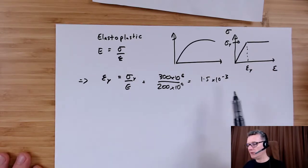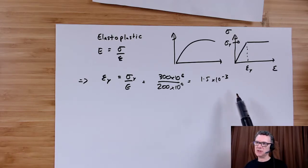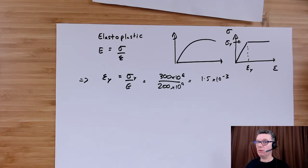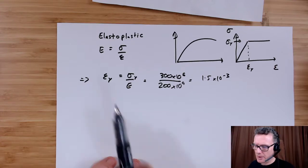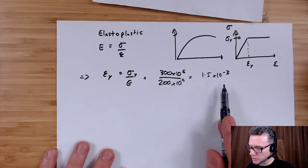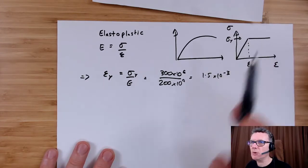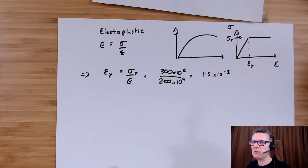Okay, so that then gives me 1.5 times 10 to the minus 3. In structural analysis, if you're not getting like 1 times 10 to the minus 4s up to 1 times 10 to the minus 2s, you're probably doing something wrong. So that's my strain up to that point.